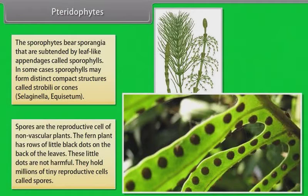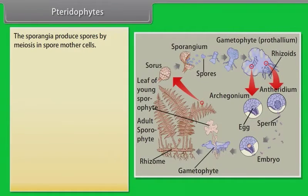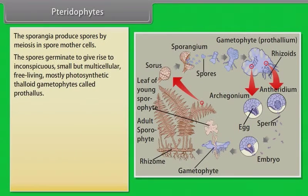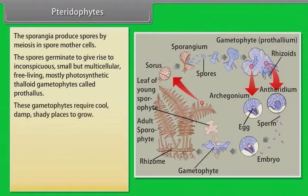Spores are reproductive cells of non-vascular plants. The fern plant has rows of little black dots on the back of the leaves. These little dots are not harmful. They hold millions of tiny reproductive cells called spores. The sporangia produce spores by meiosis in spore mother cells. The spores germinate to give rise to inconspicuous, small but multicellular, free-living, mostly photosynthetic, thalloid gametophytes called prothallus. These gametophytes require cool, damp, shady places to grow.